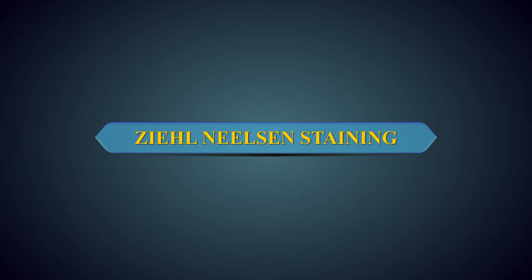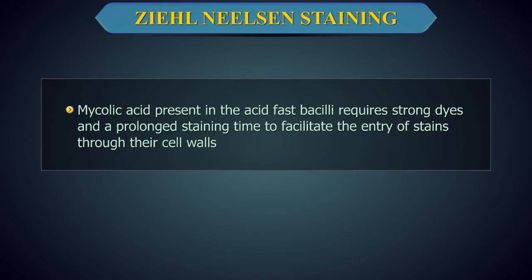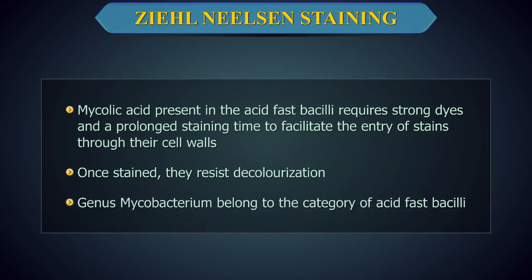Modified Ziehl-Neelsen Staining. Acid-fast or tubercle bacilli have a compound in their cell walls called mycolic acid, which makes them difficult to stain with usual staining methods. They require strong dyes and a prolonged staining time to facilitate the entry of stains through their cell walls. But once stained, they resist decolourisation. Bacteria which cause tuberculosis and leprosy are grouped under the genus Mycobacterium and belong to the category of acid-fast bacilli.